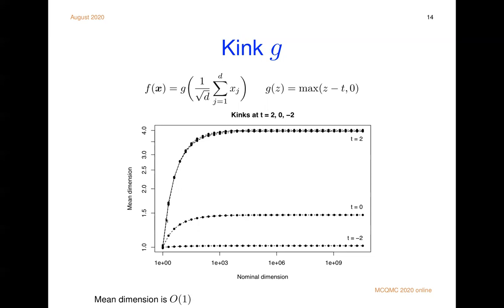So mean dimension of close to 4 means that the effective dimension could probably be a lot more than 4. So it's not necessarily low effective dimension in this function, although the effective dimension will of course be way less than 10 to the 6 or 10 to the 9, but it could be some multiple of 4. If the threshold is at minus 2, then this function has mean dimension barely bigger than 1.